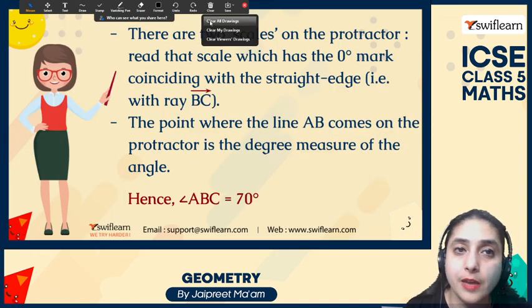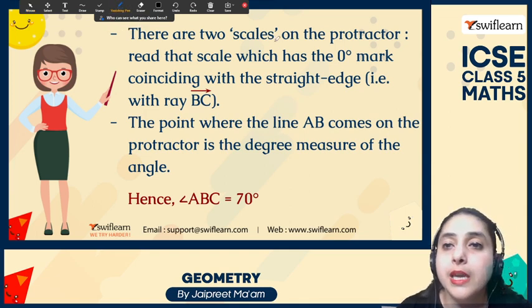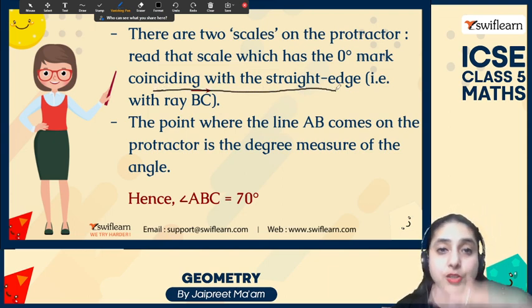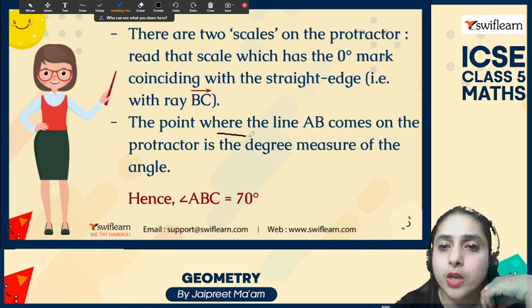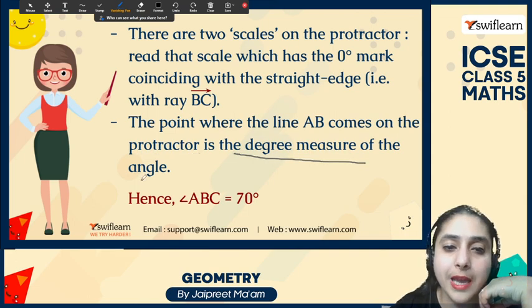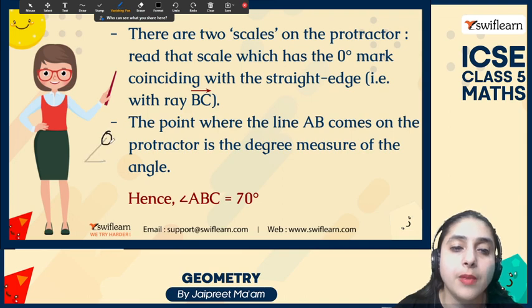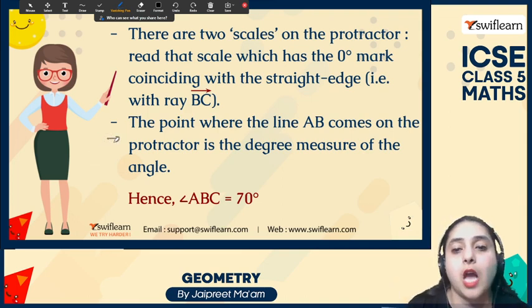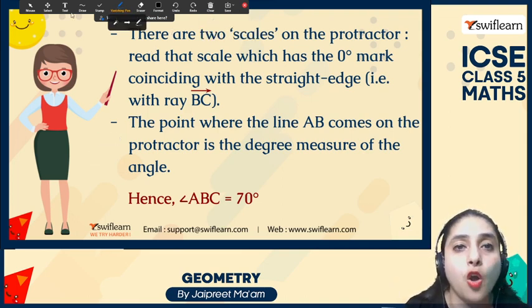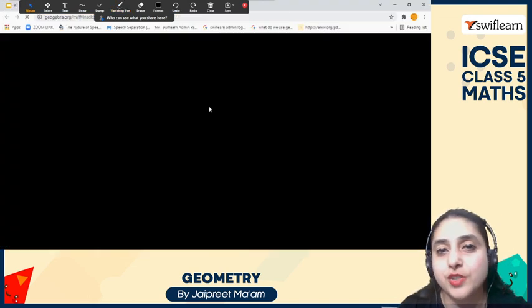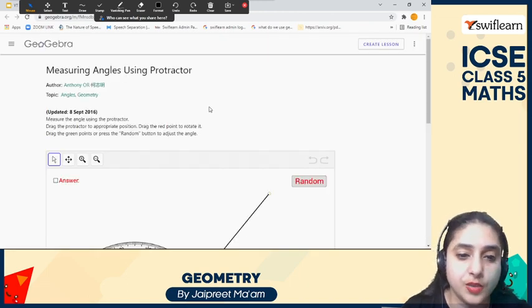There are two scales on the protractor, as I have already discussed. Read the scale which has the 0 mark coinciding with the straight edge. The point where line AB meets the protractor gives the degree measure of the angle. Wherever that point falls on the scale, that is the measure of the angle. It's a very easy and very important topic.